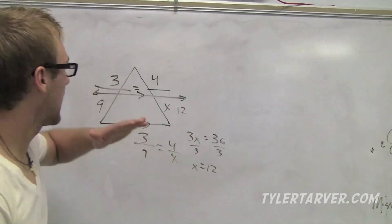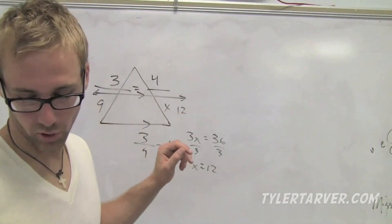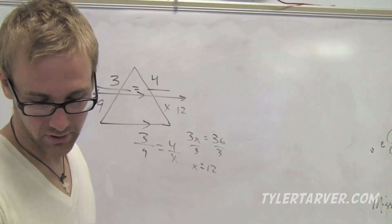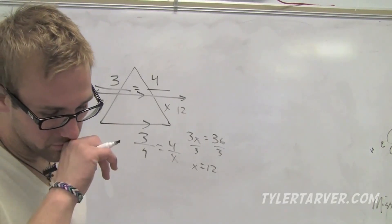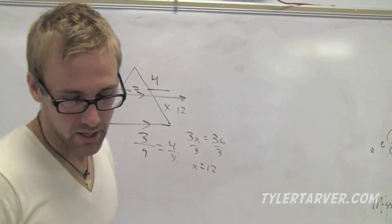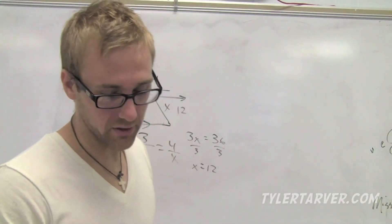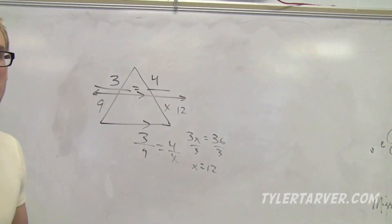So if you have a triangle and one of the lines parallel to one of the bases, it cuts those other sides proportionally. Next thing. If a line divides two sides of a triangle proportionally, then it's parallel to the third side. Pretty much what it's saying is the converse.